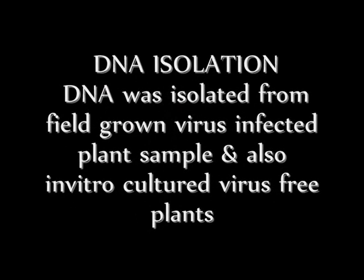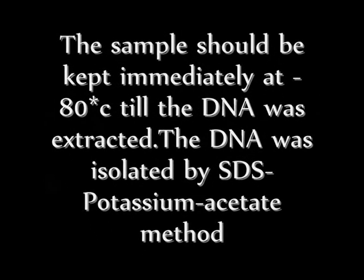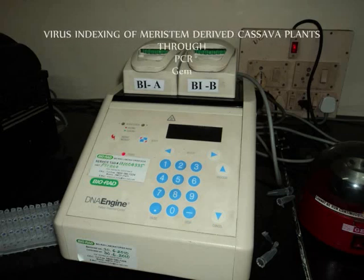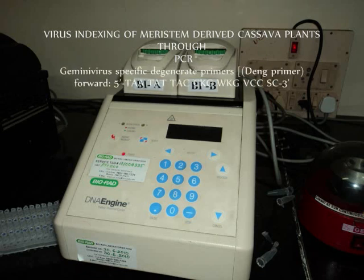DNA was isolated from the field-grown virus-infected plant samples and also from in vitro cultured virus-free plants. The samples should be immediately kept at minus 80 degrees Celsius until the DNA was extracted. Isolation of genomic DNA was done following the CTAB-potassium acetate method. To confirm the presence or absence of virus, PCR analysis was done with specific primers to amplify a 560 base pair fragment.